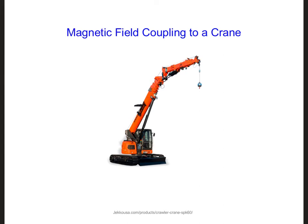This is not a picture of the crane at the construction site, but it shows how a typical crawler crane might have a vertical component and then at the top extend horizontally outward, and then a cable can dangle down from the top.